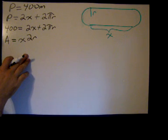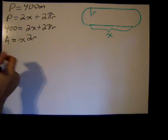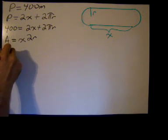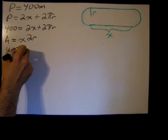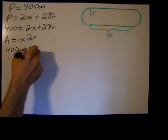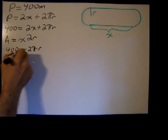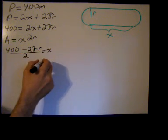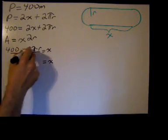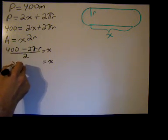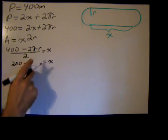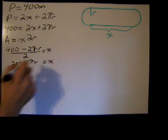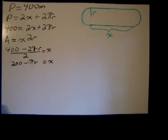I'm going to solve for x. So we'll begin by subtracting 2 pi r on both sides and dividing by 2, and we get an equivalence for x. Then if we can divide both of these by 2 we get x equals 200 minus pi r.